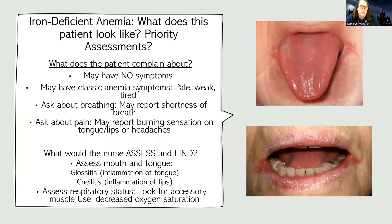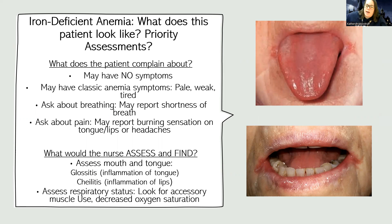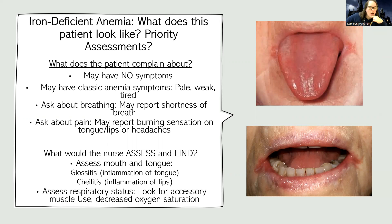So what does a patient with iron deficient anemia look like? They may have no symptoms depending on how severe their anemia is, or they can have those classic symptoms like being pale, weak, and tired. You want to ask about their breathing — they may report feeling short of breath. Something specific to iron deficient anemia is that they can have glossitis, which is inflammation of the tongue, or chelitis, which is inflammation of the lips.